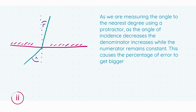This part was worth a total of six marks, broken down as follows: three marks for talking about decreasing the angle of incidence, and a final three marks for noting that there is a greater percentage error, which comes from the fact that as the angle of incidence decreases it is the denominator of the fraction that causes the overall fraction to get bigger, creating a larger percentage error.